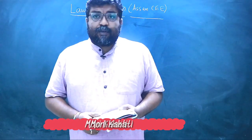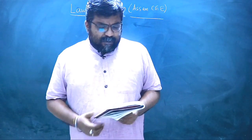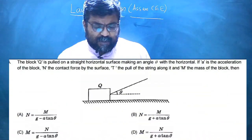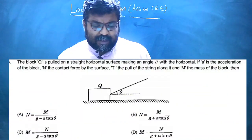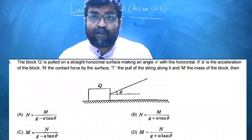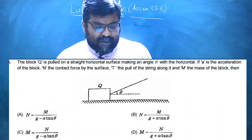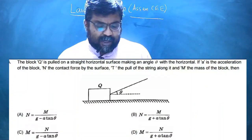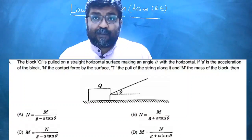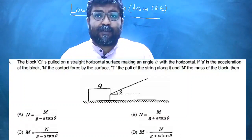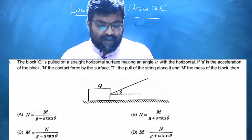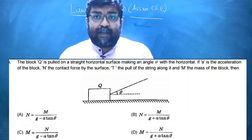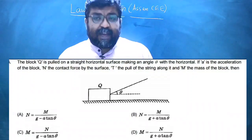The first question is that a block is pulled on a straight horizontal surface, making an angle theta with the horizontal. If A is the acceleration of the block, N is the contact force, T is the pull of the string, and M is the mass — find the relationship between M and N.